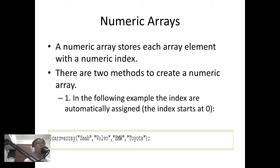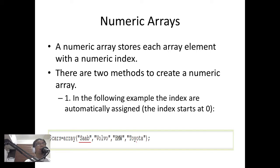Numeric arrays. A numeric array stores each array element with a numeric index. There are two methods to create a numeric array. In the first method, the indexes are automatically assigned and the index starts with zero. Looking at the example, we have the variable 'cars' declared as an array with its elements, where the first element has index zero, then one, two, and three. That's why it's called a numeric array — because the index is numeric.